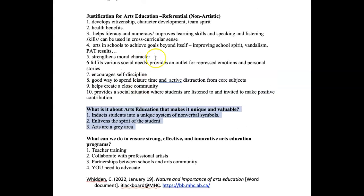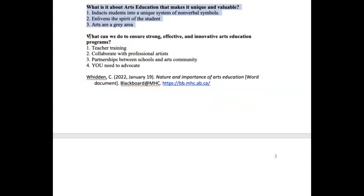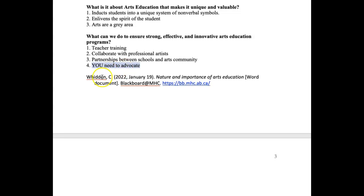What can we do to ensure strong, effective, and innovative arts education programs? Teacher training — like the arts courses you've done covering foundations and why the arts are important. Collaborate with professional artists by bringing them in so kids can see there's life outside school for the arts. Partner with schools and arts communities — take them to venues like Medelta or the Esplanade, take them to a show or play so they see that art is out there. You are the best advocate as a teacher to inspire your kids and show them the amazing things they can learn through the arts. That's the fast and furious importance of the arts lecture — take care.